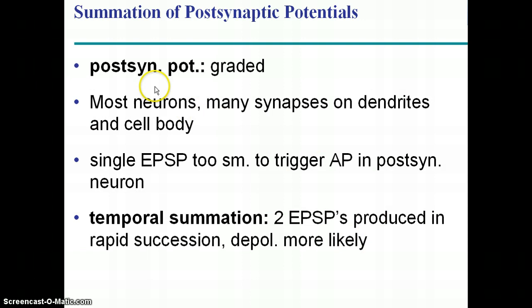These postsynaptic potentials — the potentials that reach the dendrites of the postsynaptic neuron — are graded. You can have partial depolarizations that don't reach threshold. That basically means some of the gates are going to open and you'll get some sodium flowing in, but not enough to cause a full-blown action potential.